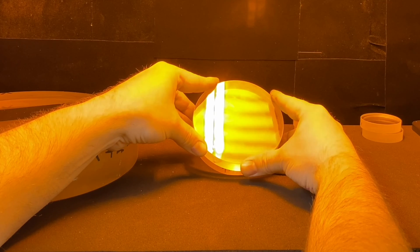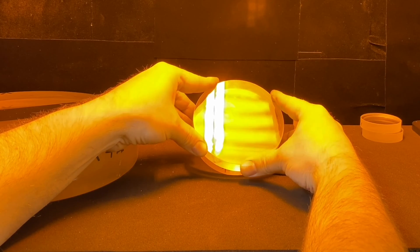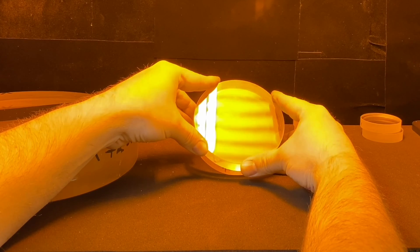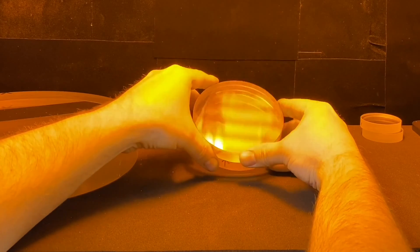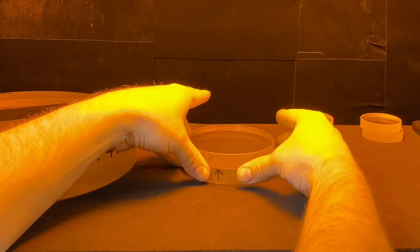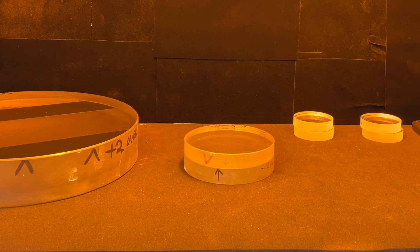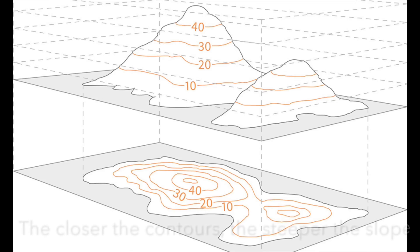I'll put together another video which will explain the theory behind interference and how all of this works. But for now, that's what the fringes look like. The best way to try and understand what the fringes are representing is map contours.